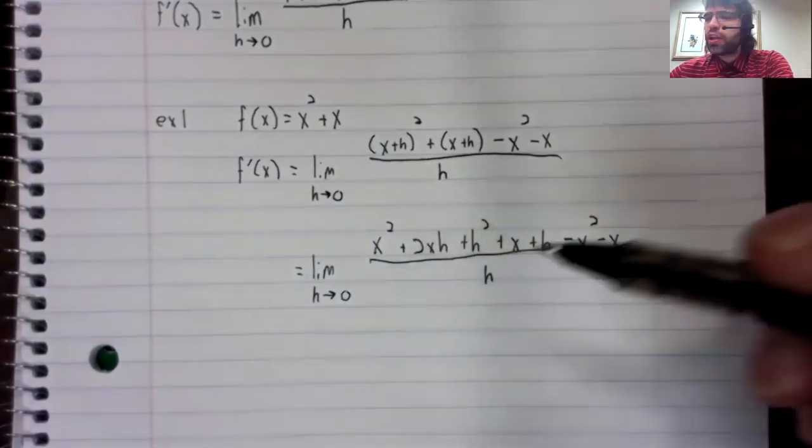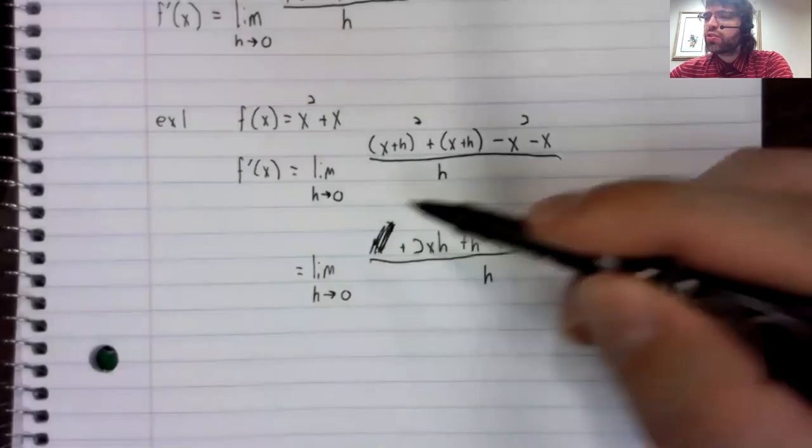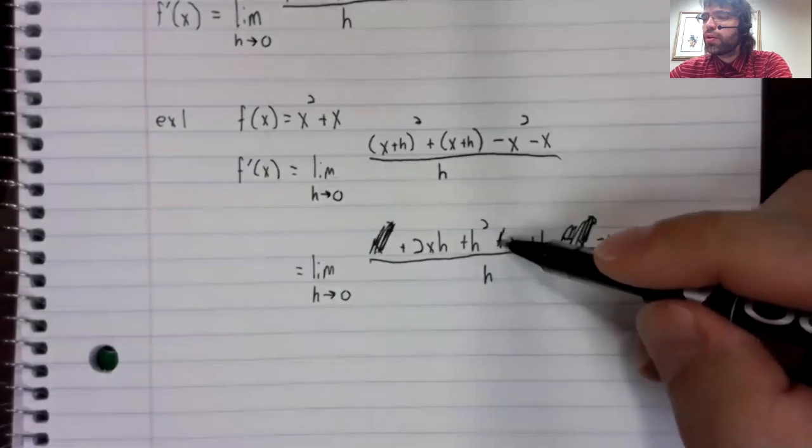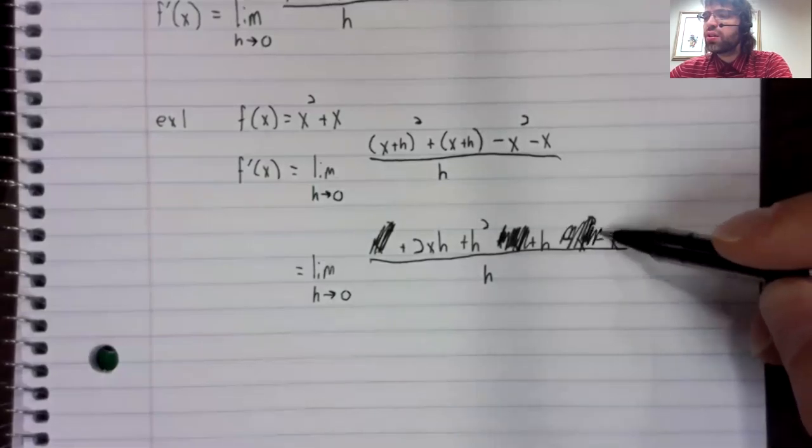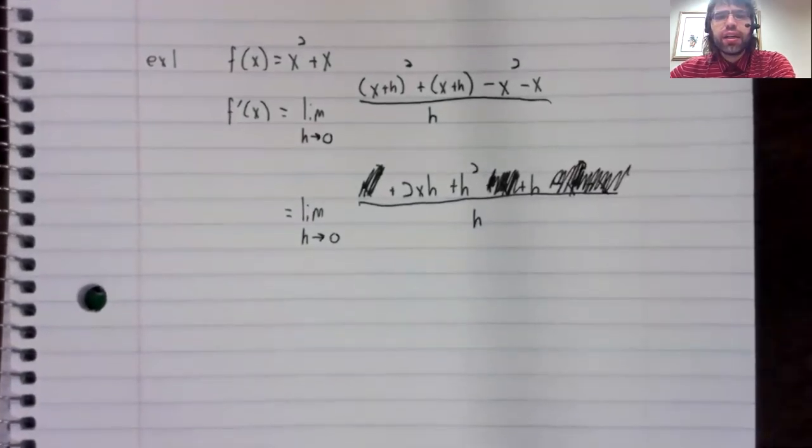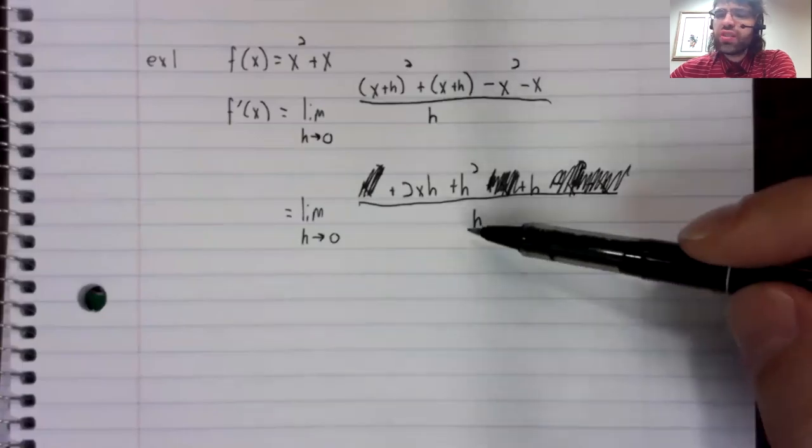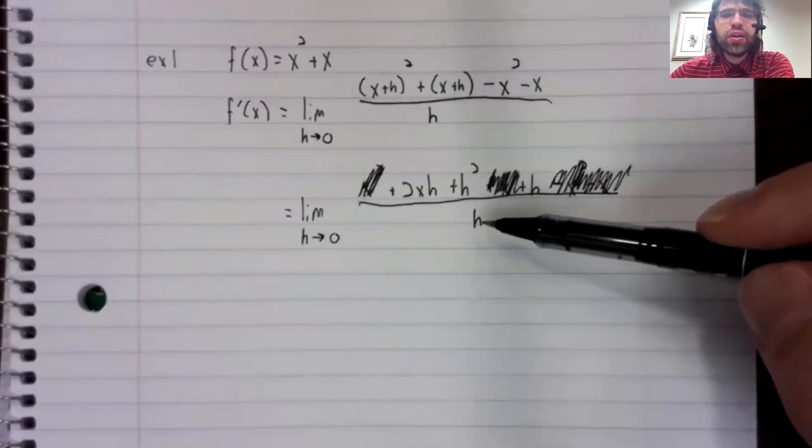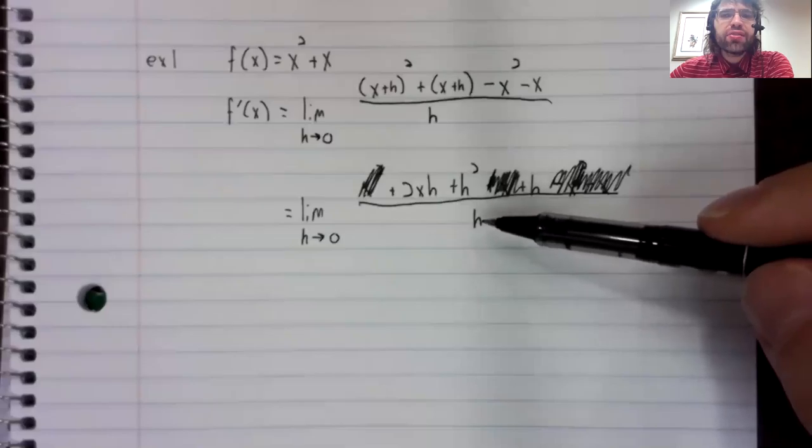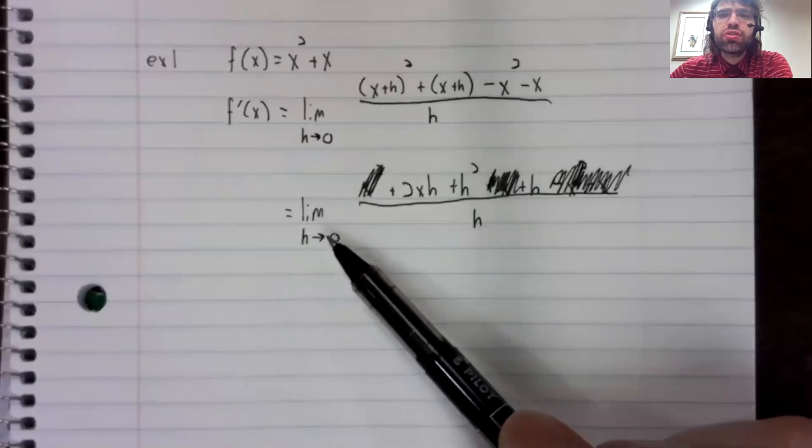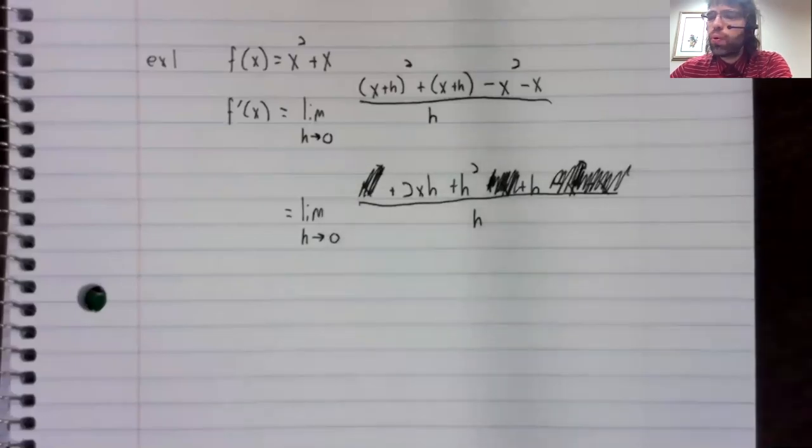And looking at the numerator, we have an x squared minus an x squared. We have an x minus an x. And now what? Well, this h in the denominator is a nuisance. It's kind of the problem here. If we didn't have this division, we could just use continuity. We could just let h equal zero.